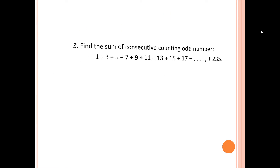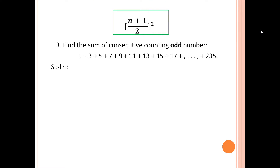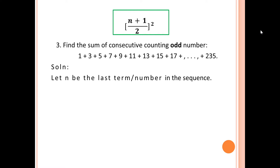Let's move to problem number 3: find the sum of consecutive counting odd numbers starting from 1, 3, 5 up to 235. Notice the pattern: 1 + 3 = 4, which is the perfect square of 2. Adding 5 gives 1 + 3 + 5 = 9, the perfect square of 3. Including 7 gives 16, the perfect square of 4. So our formula is ((n + 1) / 2)², where n is the last term in the sequence.